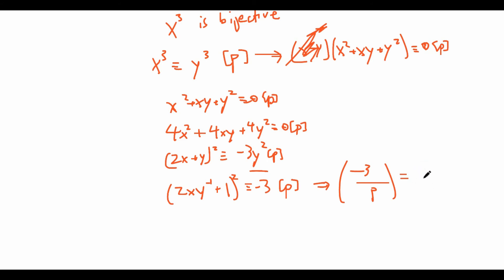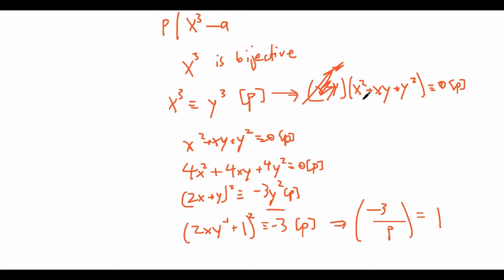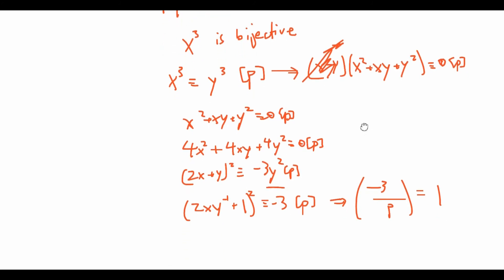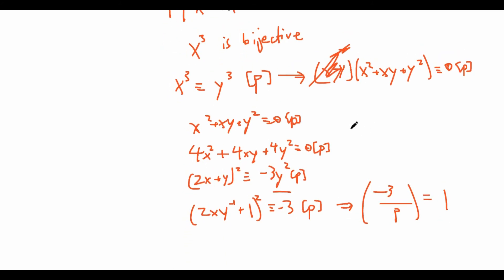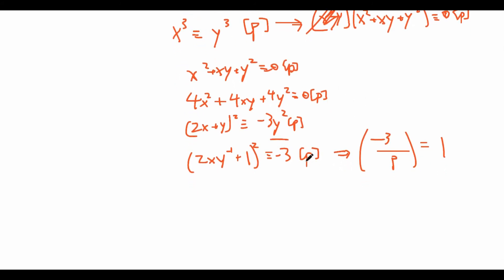This means the assumption that x ≢ y only fails to give a contradiction when −3 is a quadratic residue mod p. In other words, when −3 is NOT a quadratic residue mod p — i.e., (−3/p) = −1 — then x³ is bijective mod p, and therefore there exists an x such that p divides x³ − a. So we only need to separately handle the case when (−3/p) = 1.